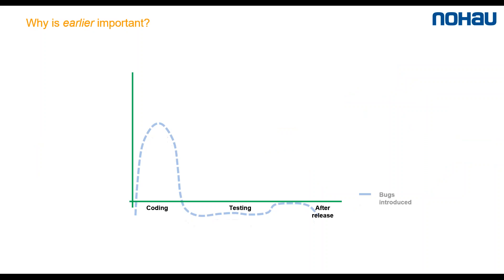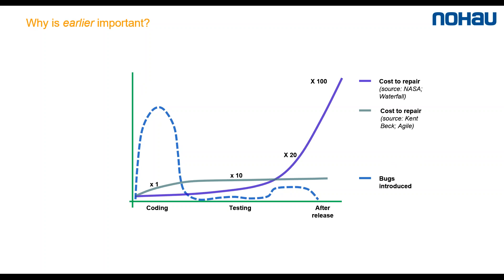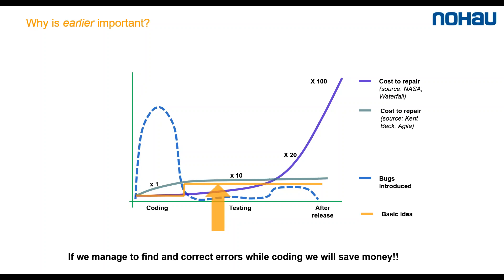So why is early bug fixing important? This is a graph showing when bugs usually enter into the system and how much it costs to remove them. It depends on your process and labor cost, but here are two graphs showing the relative cost — one for V-Model waterfall and one for Agile. Agile methods are less expensive due to shorter feedback loops. The basic idea is to save money by finding errors as early as possible. It's less costly to fix them during coding.